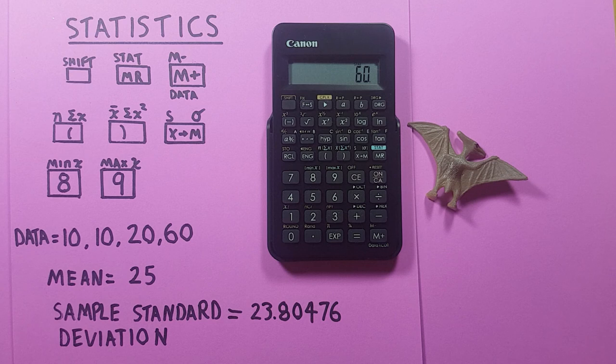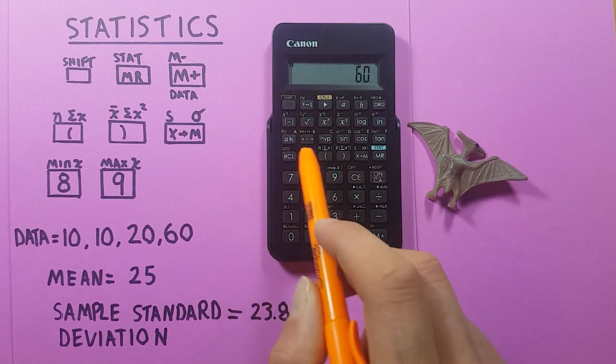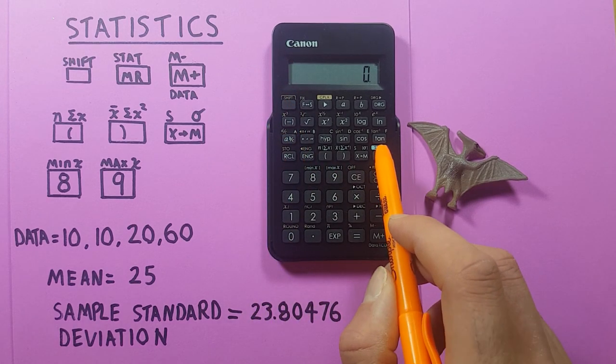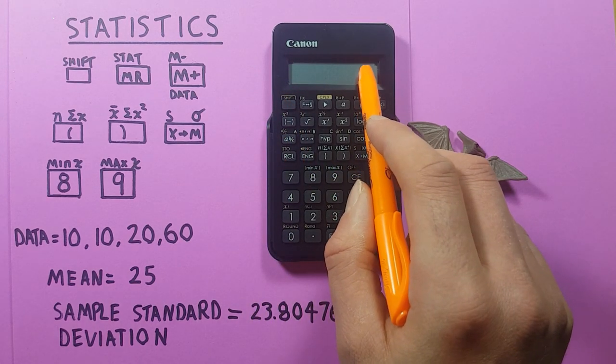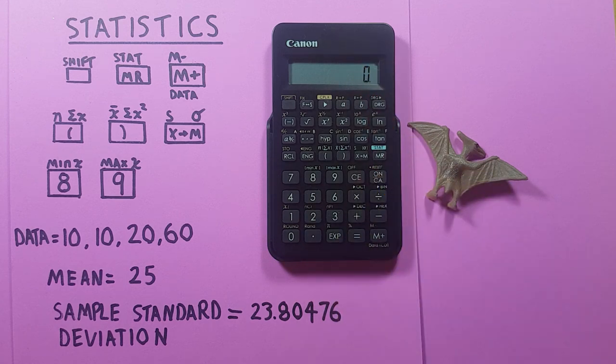Alright, so this little calculator has a good number of basic statistics that will help us out. And when we're done with it, we want to make sure we convert it back to normal mode by pressing shift MR. Again, you see the word STAT disappears from the top of the screen. And we're back into normal calculation mode and can do any other calculations that we might need to do. Alright, I hope this helps and good luck on those tests out there.